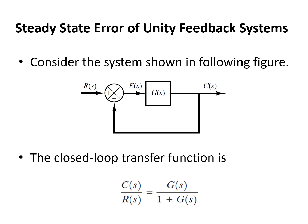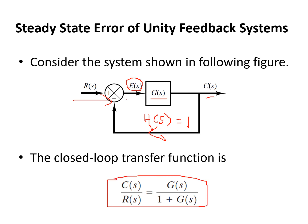Coming to steady state errors of a unity feedback system — let us consider the system shown in the figure. R(s) is the input, E is the error signal, G is the open loop transfer function, and C is the output. H(s) is unity because it is a unity feedback control system. For this type of system, the closed loop transfer function is C(s)/R(s) = G(s) / (1 + G(s)), since H(s) = 1.